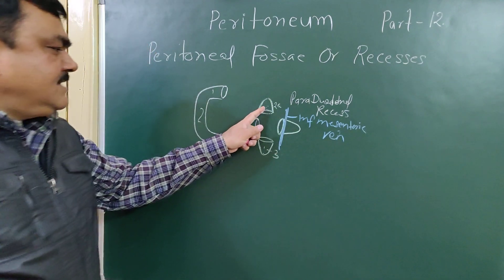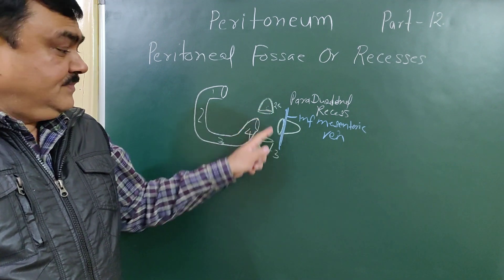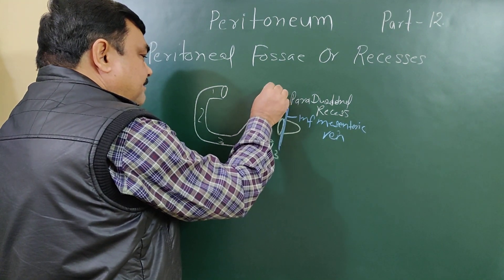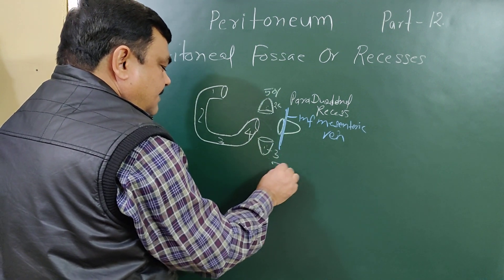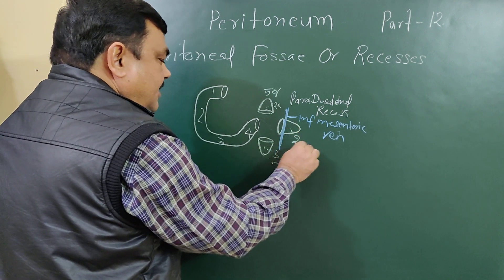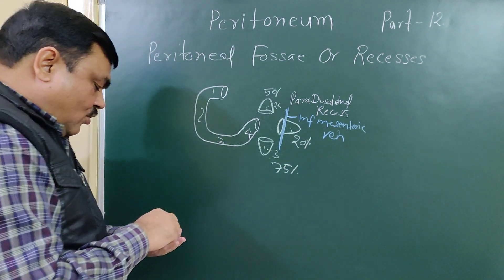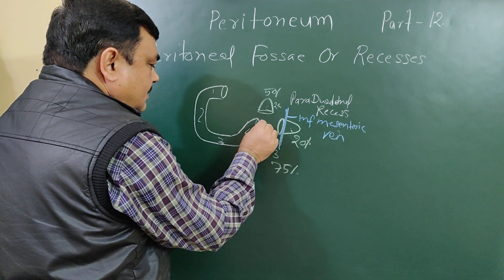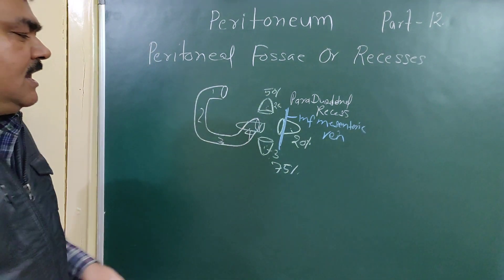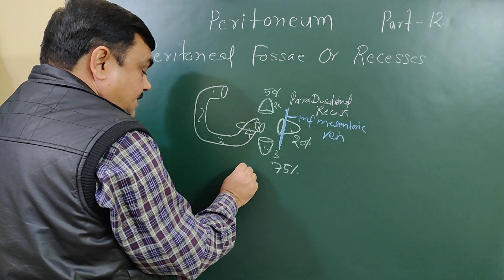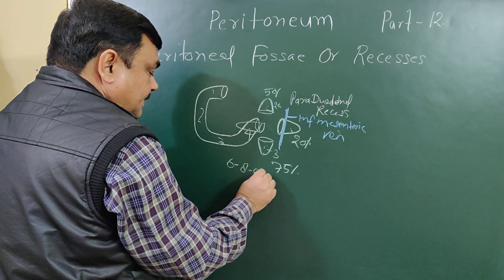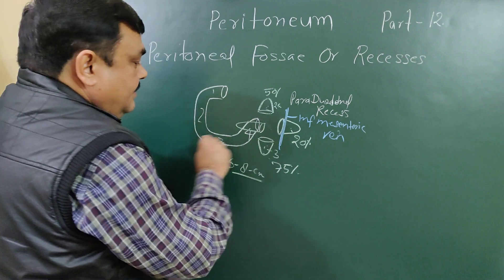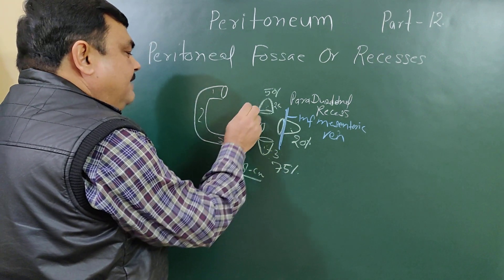The inferior duodenal recess has a depth of about two to three centimeters. It courses along two vertebrae. The retroduodenal recess — its length varies and may be six to eight centimeters — opens towards the left side and is very rarely present.